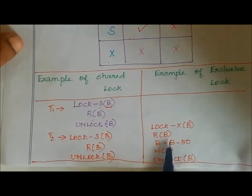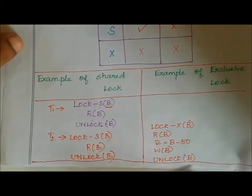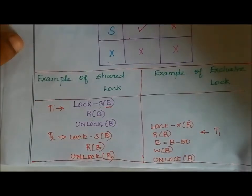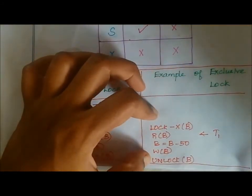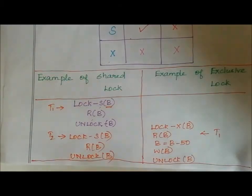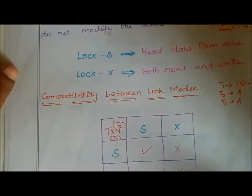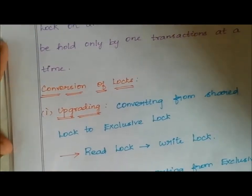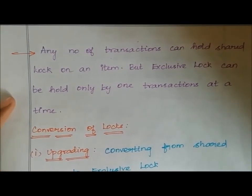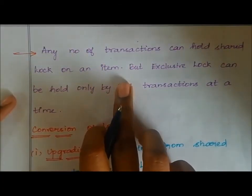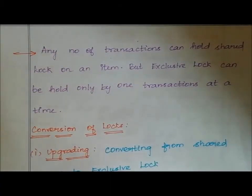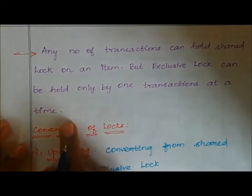Both read and write operations can be performed in an exclusive lock. The main difference between exclusive and shared lock is: any number of transactions can hold a shared lock on a particular data item, but an exclusive lock can be held by only one transaction at a time.